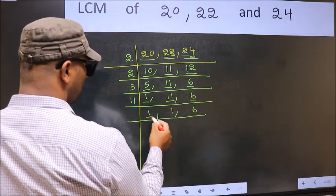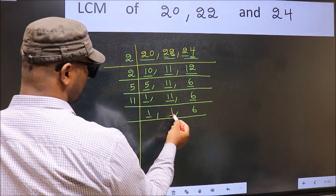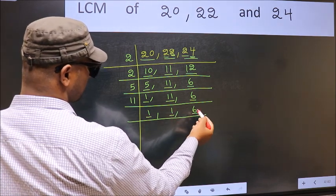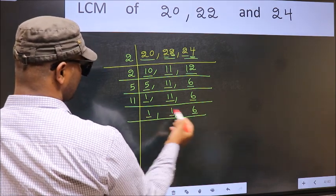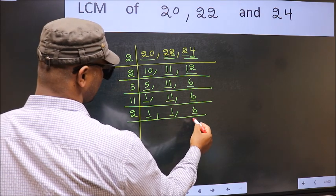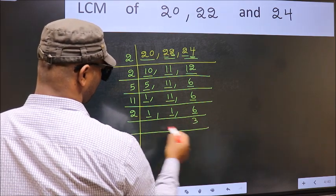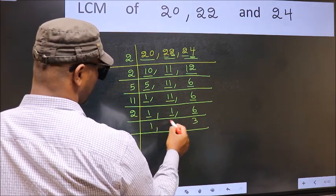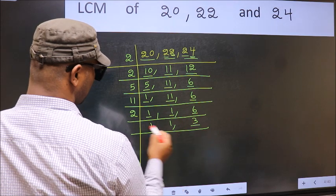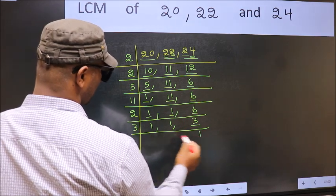Now we got 1 here and here, so focus on the other number 6. 6 is 2 threes is 6. Now we have 3 — 3 is a prime number, so 3 once is 3.